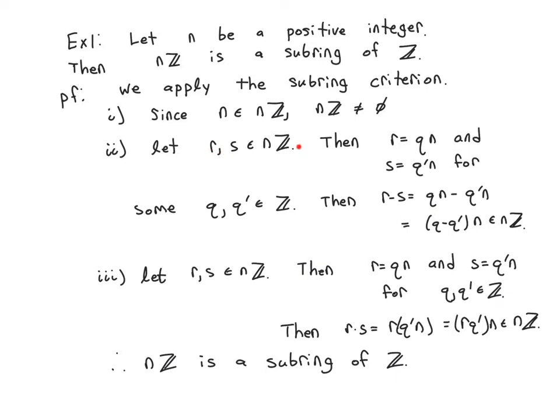What does it mean to be a multiple of N? Well, that means R is equal to QN. S is equal to Q prime N for some Q and Q prime that are definitely integers. Note these are different variable names because we started with different variables. Then what is R minus S? Well, we can substitute for R with QN. We can substitute for S with Q prime N. Factor out the common factor of N. And look, we have an integer multiple of N.